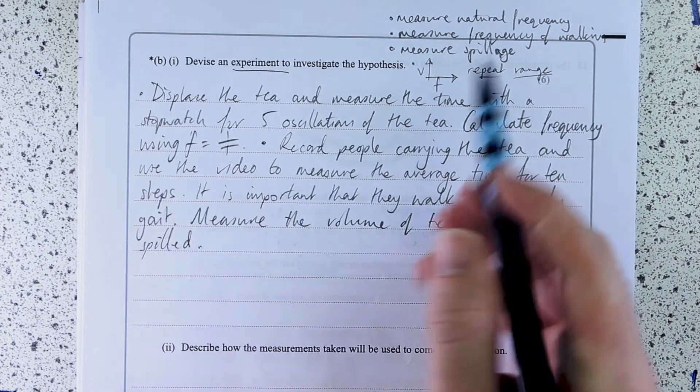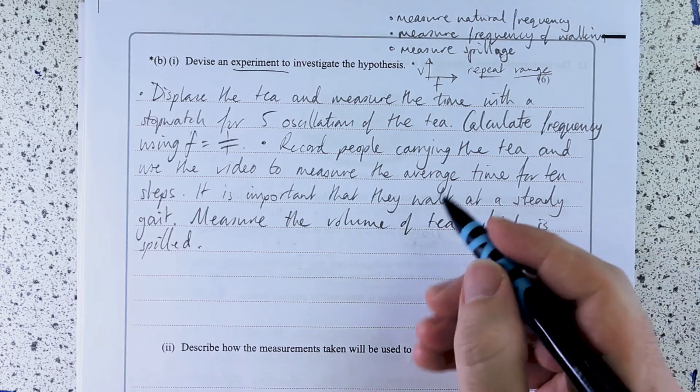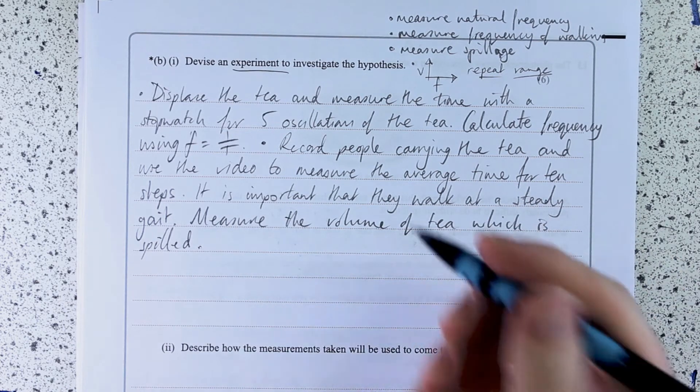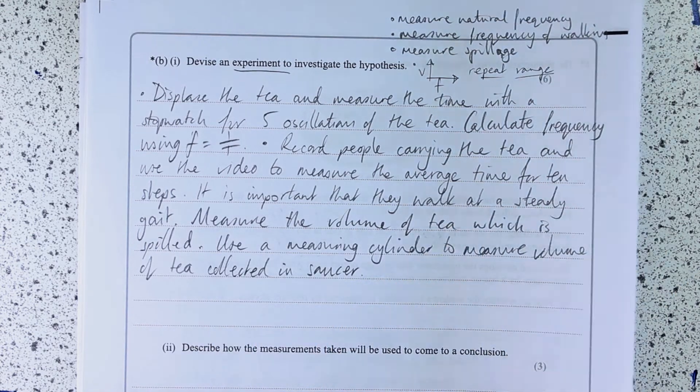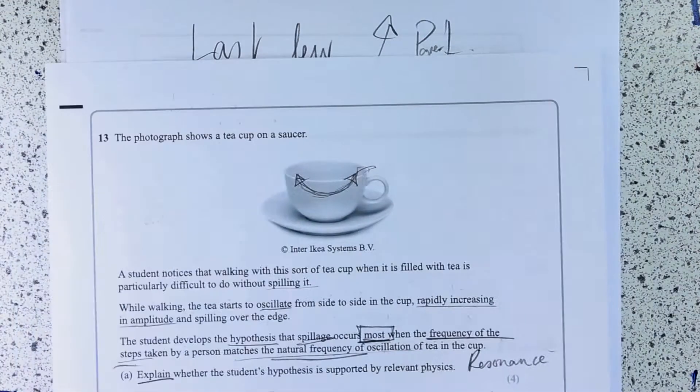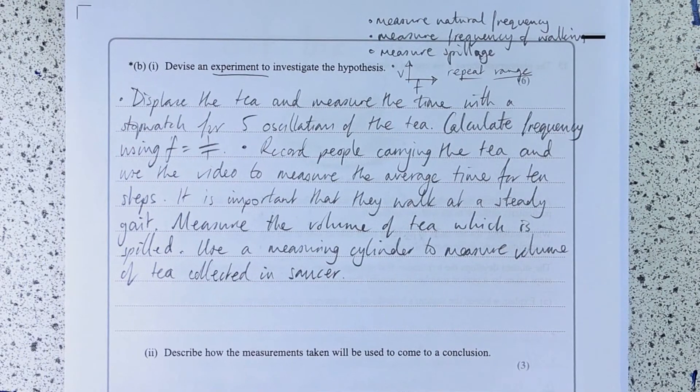Well, then what I'm going to do, I've talked about how I'm going to measure the volume of the tea. Maybe I'll use the saucer to collect that in a measuring cylinder. This is the apparatus I've been given to work. Well, I know it sounds ridiculous, but that's clearly a teacup and saucer. That's clearly what we want there.